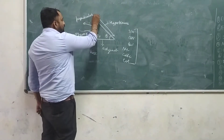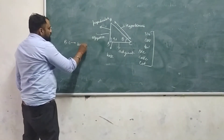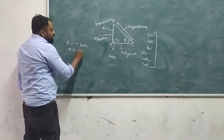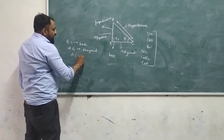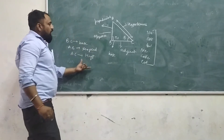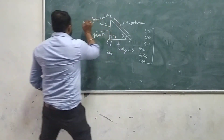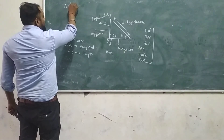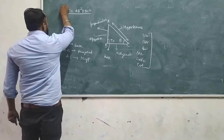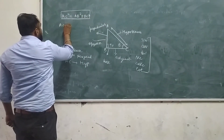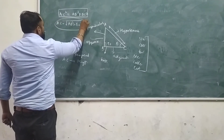If we label this triangle as ABC, then BC is the base, AB is the perpendicular, and AC is the hypotenuse. One theorem is there — the Pythagorean theorem — which states that AC squared equals AB squared plus BC squared, meaning the value of the hypotenuse equals the square root of the sum of the squares of the other two sides.